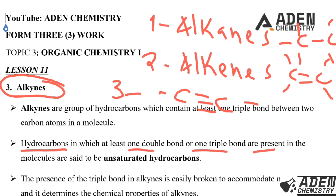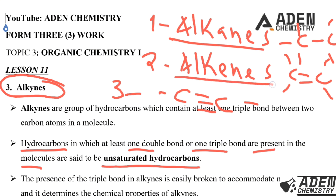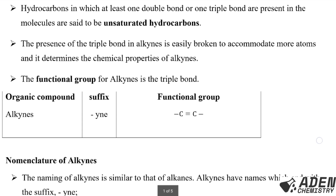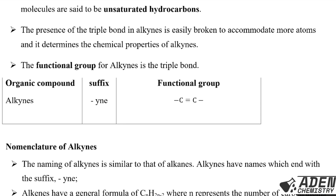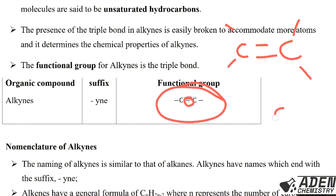Hydrocarbons in which at least a double bond or a triple bond are present in the molecule are said to be unsaturated hydrocarbons. Alkanes are saturated hydrocarbons; alkenes and alkynes are unsaturated. The presence of the triple bond in alkynes is easily broken to accommodate more atoms. The functional group for alkynes is the triple bond — alkenes have the double bond as functional group, and alkynes have the triple bond.